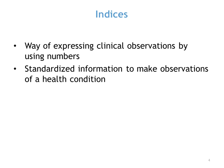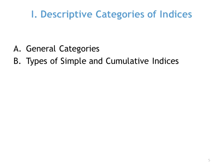So what is an index? An index is a way of expressing clinical observations by using numbers. The use of numbers provides standardization to make observations of a health condition consistent and less subjective than a word description of that same condition. There are descriptive categories of indices. General categories can be simple or cumulative. The simple index measures the presence or absence of a condition — for example, dental biofilm without evaluating the effect on the gingiva. A cumulative index measures all the evidence of a condition past and present, such as the DMFT index for dental caries.